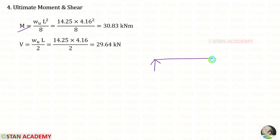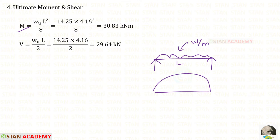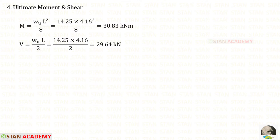For a simply supported beam with load W per meter and span L, the bending moment diagram is parabolic. The formula for maximum moment is WL squared upon 8, and the maximum shear force at the supports is WL upon 2. Using the effective length of 4.16 meter and the factored load we calculated, for the moment M we will get 30.83 kilo Newton meter, and for the shear force V we will get 29.64 kilo Newton.